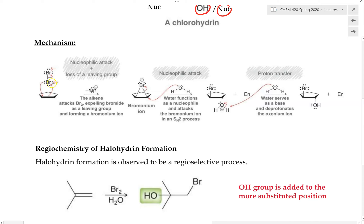First, the alkene interacts with the halogen to produce a bromonium ion — or if we have chlorine, we would name it the chloronium ion. Because we have water in this reaction, water serves as both the solvent and the nucleophile. Water then attacks one of the carbons to break up this three-membered ring, followed by a final proton transfer step. So bromine is added to one side and the OH group to the other.